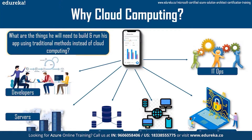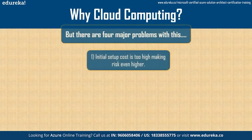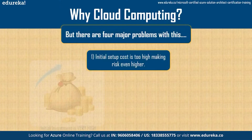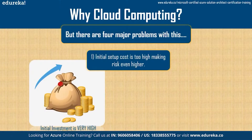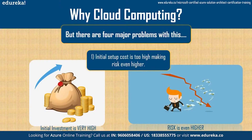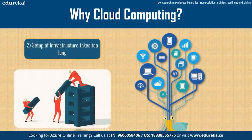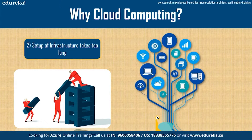John figured there would be four major problems with this setup. The first problem is that owning his own infrastructure would require a huge amount of money, and because of the large investment in setup, this would greatly increase the risk if the app fails. The second problem is that the infrastructure would take too long to set up, as he would have to buy all the components required.